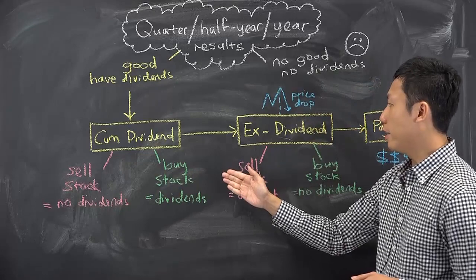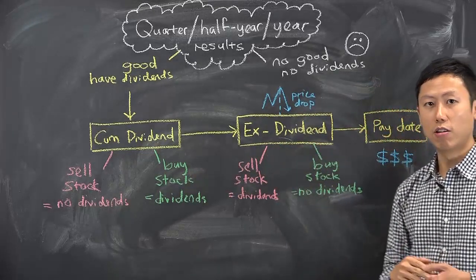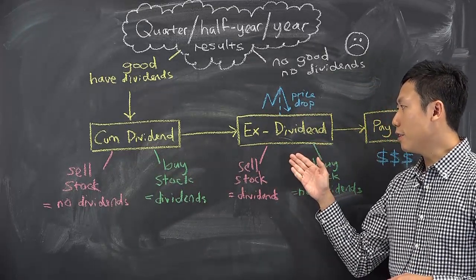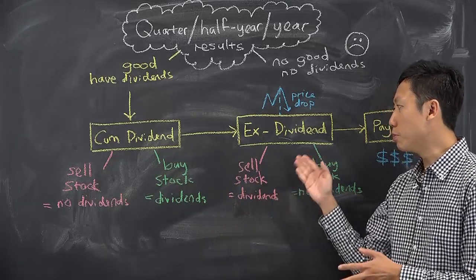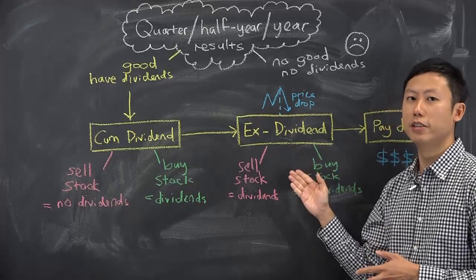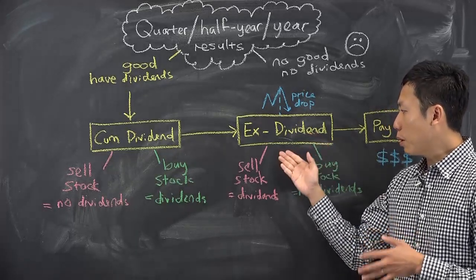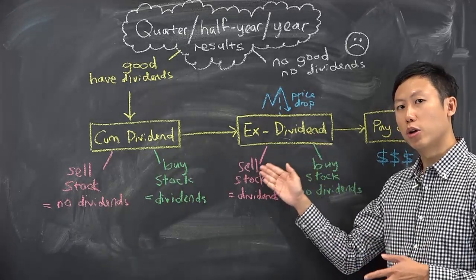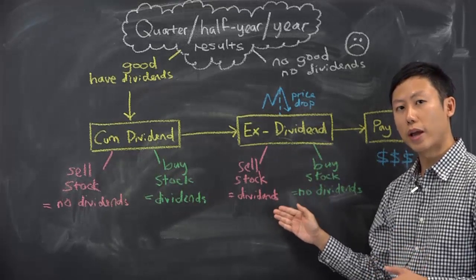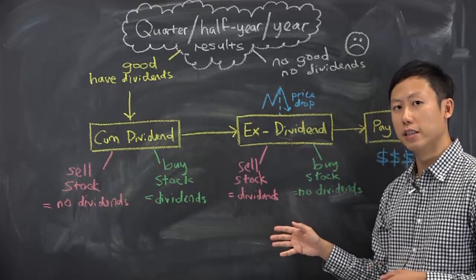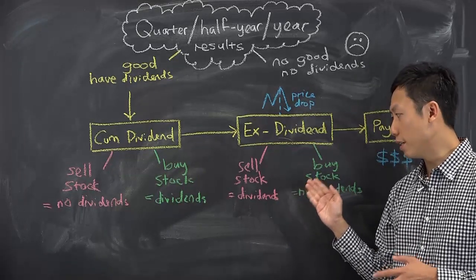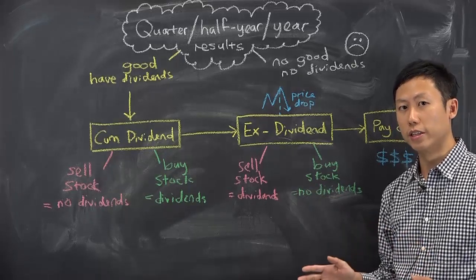After the cum dividend date, you move to the ex-dividend date, or XD in short. This is the reverse of cum dividend — if you buy on this date, it excludes the dividend. So if you are a shareholder who holds until the XD date and then decides to sell, you will still receive the dividend. Meanwhile, someone who buys into the stock during the ex-dividend date will receive no dividends.